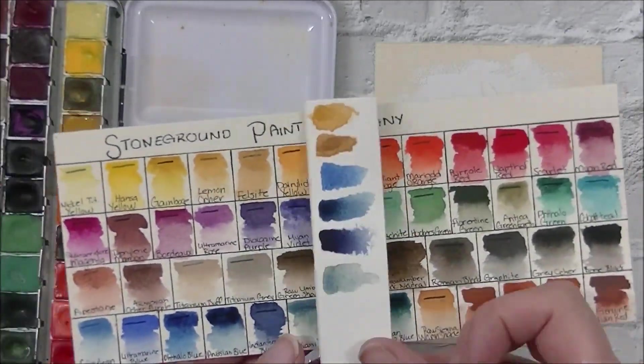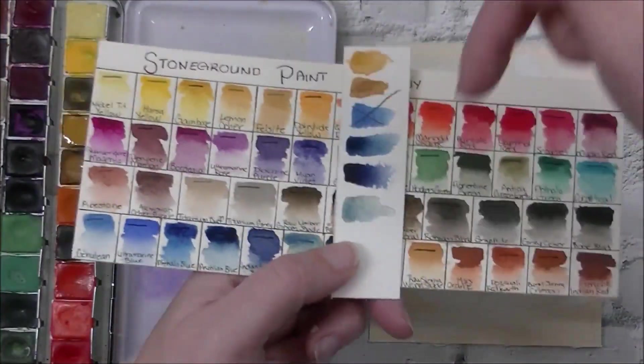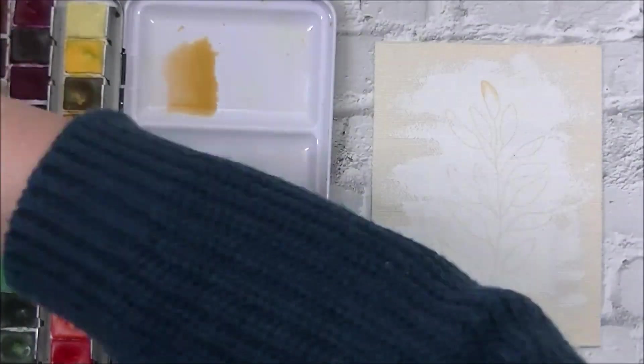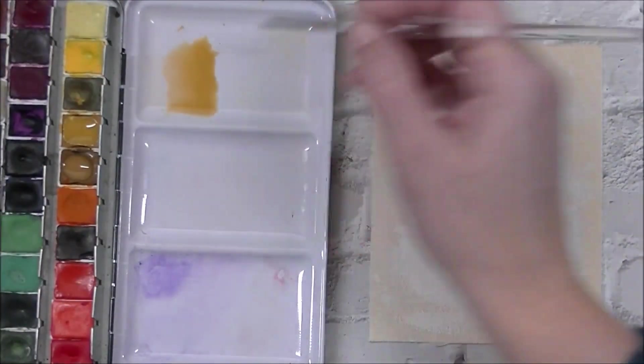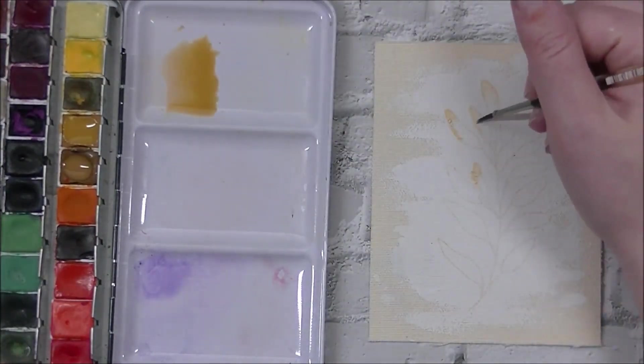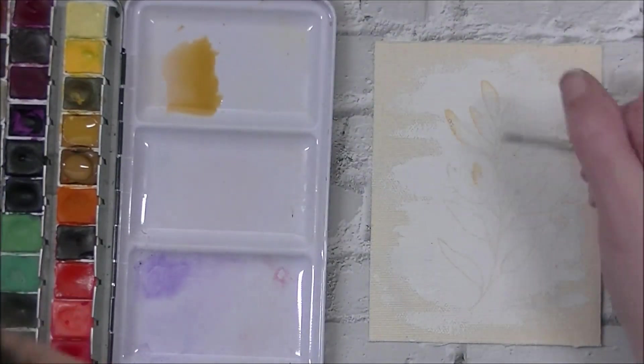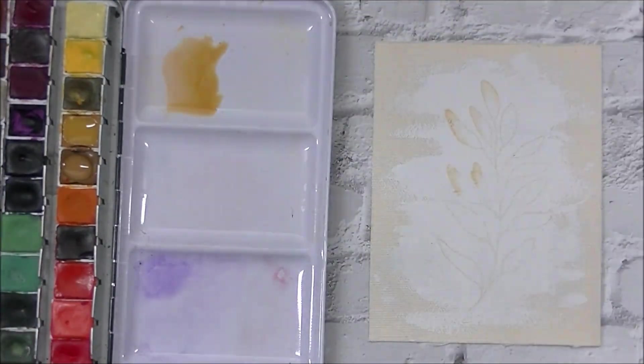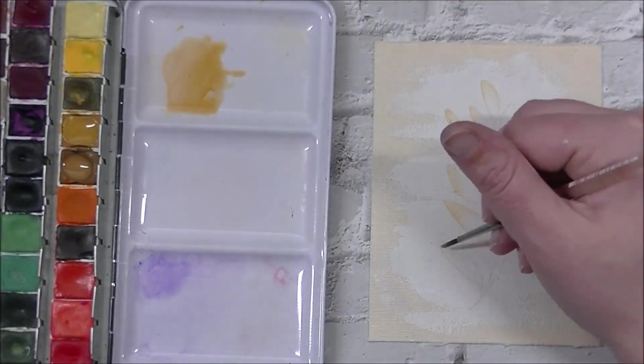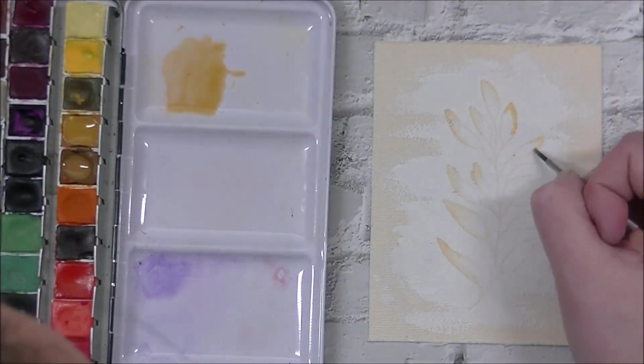I'm pulling out my Stone Ground Paint Company paints. I did swatch a bunch out. I ended up not using two of those five colors, but I do use the yellow ochre, the felsite, and the Prussian blue. I'm just putting the yellowy color towards the tip of the leaf and the blue in the base, and we're just going to blend them back and forth and mix them together. This was super fun.